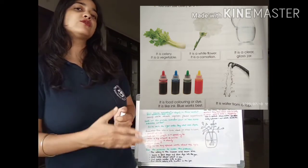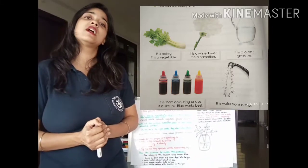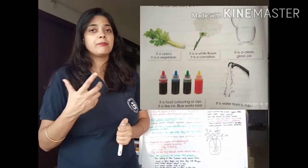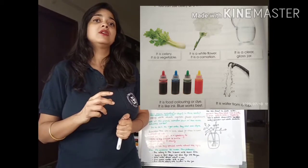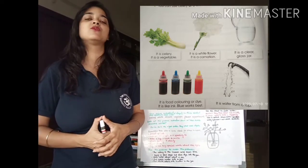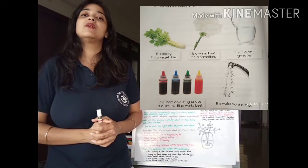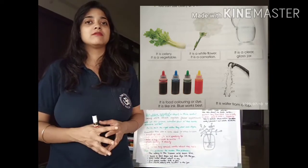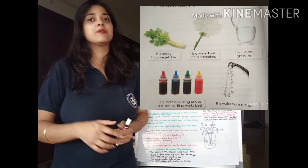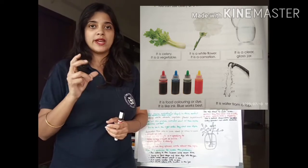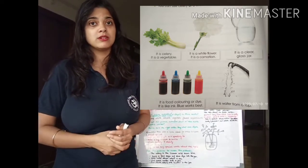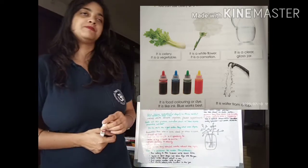You can also see a flower or a carnation. What is a carnation? It is a white, pink, or red flower with a pleasant smell. Any white, red, or pink flower with a pleasant smell will fit the bill for this experiment. You have to get a white flower to show how plants are absorbing water.